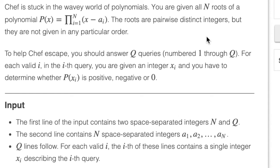Today I'll be going over the Wave problem from the CodeChef June Cook-Off 2021 Division 3. Let's look at the problem statement. Chef is stuck in the wavy world of polynomials. You are given all n roots of a polynomial. These roots are pairwise distinct integers, but they are not given in any particular order.